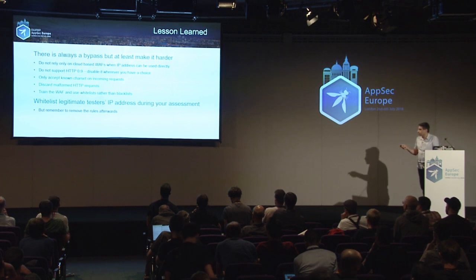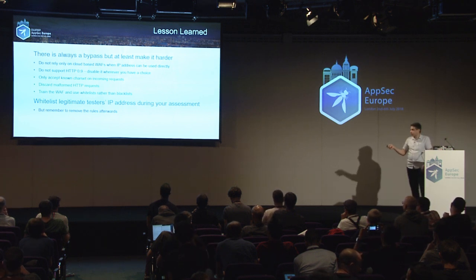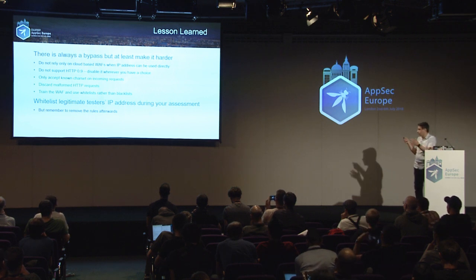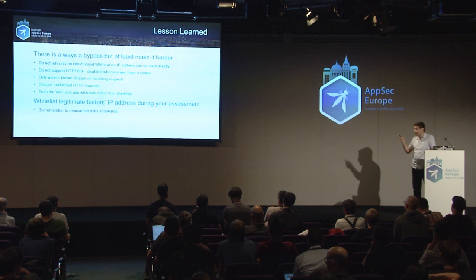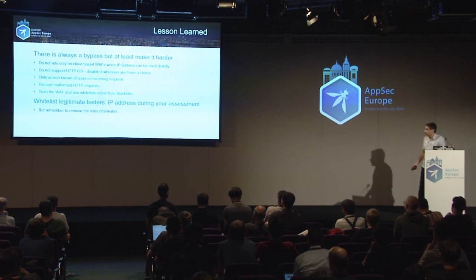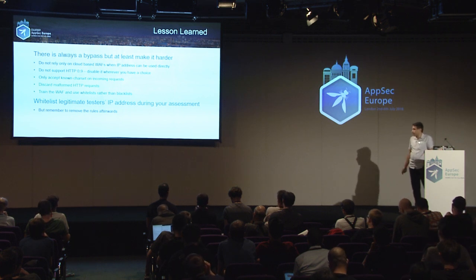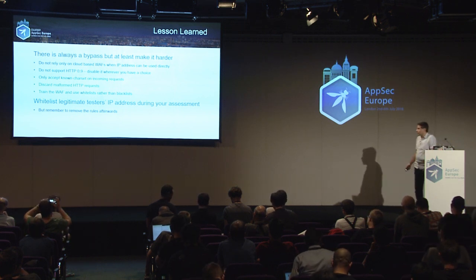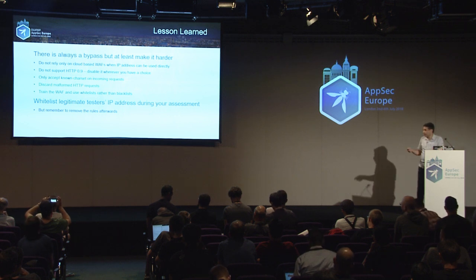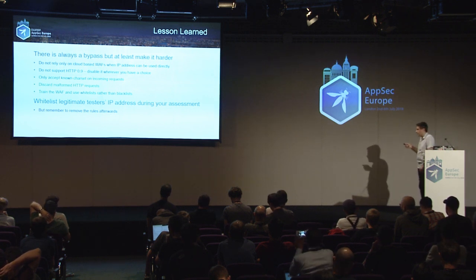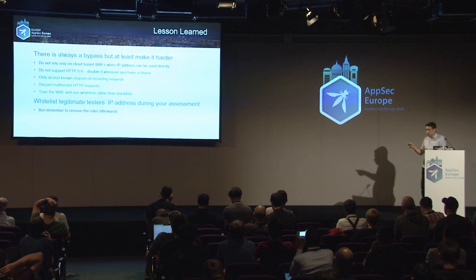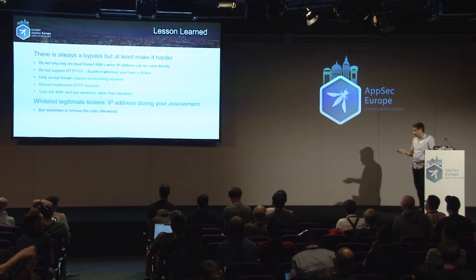Lessons learned: If you're using cloud WAFs, prevent direct IP access — make sure traffic always goes through the WAF using a secret header. Don't support HTTP version 0.9 at all. Only accept known character sets in requests. Discard malformed HTTP requests and don't accept invalid ones. If you can afford a whitelist WAF, use that — it's the best. And remember to whitelist the pentester's IP address during an assessment and remove it afterwards, otherwise you don't get value for money.